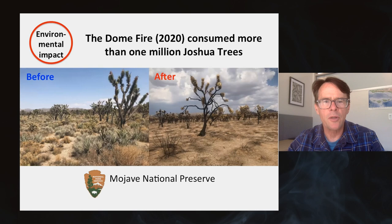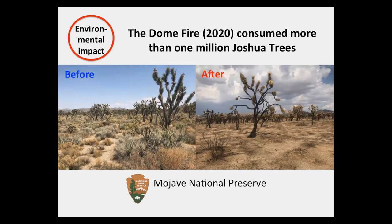This may be especially true in the western parts of North America. Large portions of the Great Basin have been converted from sagebrush steppe to grasslands composed primarily of cheatgrass and other non-native grasses, and the Mojave Desert is also susceptible to grass fire cycles. The Dome Fire in 2020, for instance, is believed to have consumed more than one million Joshua trees, and this fire was sustained by red brome and other grasses that occur commonly in parts of the Mojave Desert.